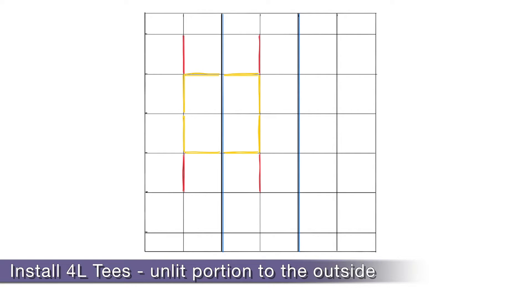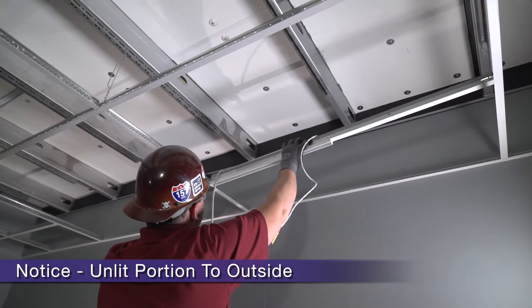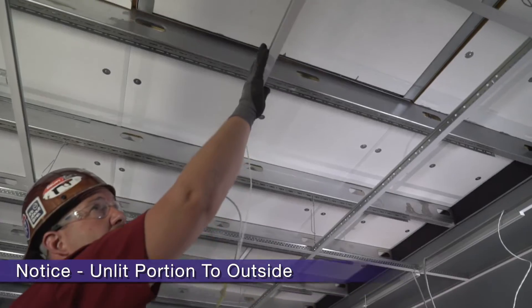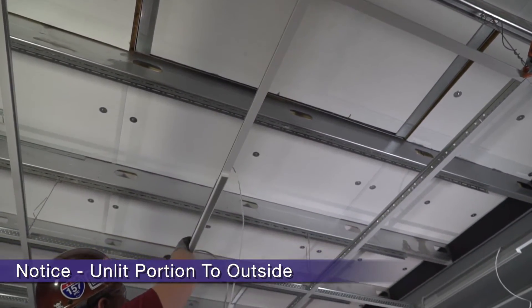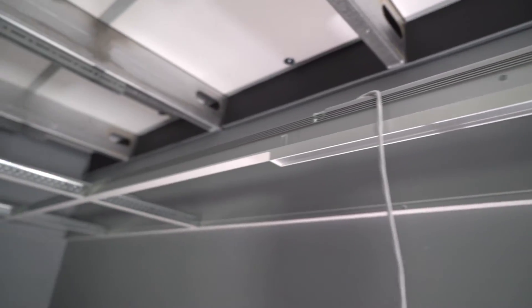The exposed T portion, pictured in red, runs away from the path of the LED lighting and stabs into a perpendicular four foot cross T. Notice, we are keeping the exposed unlit portion of the T to the outside of the LED light pathway.